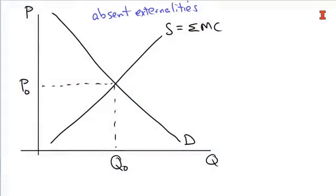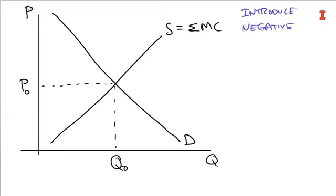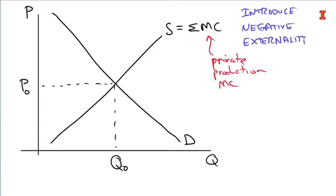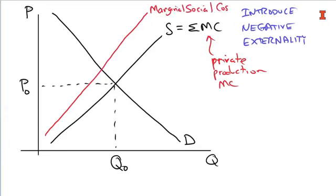Now let's consider a world where we have some externalities. We're going to introduce a negative externality: pollution. What the negative externality does is this — the private production marginal cost exists, but in addition to that, there's some additional pollution cost on top. So the marginal social cost is bigger. The marginal social cost equals private costs plus the social costs of pollution on the margin. For any given output point, firms incur private costs, but society bears this extra cost of emissions that spill out of the smokestack or into the Hudson River.